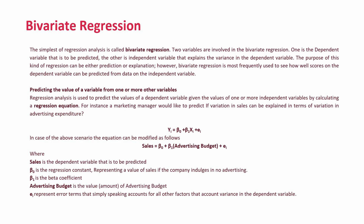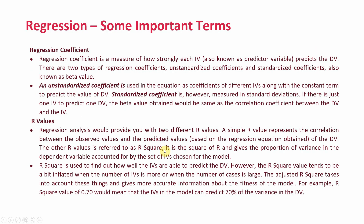For instance, a marketing manager would like to predict if variation in sales can be explained in terms of variation in advertising expenditure. In the basic regression equation, sales is the dependent variable, W is the regression constant, B1 is the beta coefficient, advertising budget is the independent variable, and E represents the error term which accounts for all other factors that could account for variance in sales. B1 means one unit change in advertising budget will bring this much change in sales, and if there is no advertising budget, this will be the baseline amount of sales.